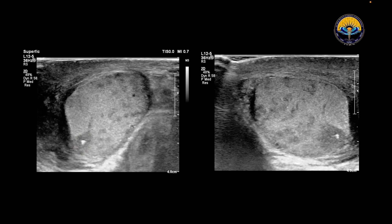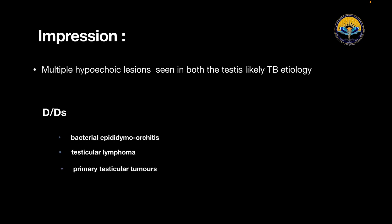After my findings, the impression is multiple hypoechoic lesions seen in both the testes, likely TB etiology. My differentials are: bacterial epididymal orchitis, testicular lymphoma, or primary testicular tumors.